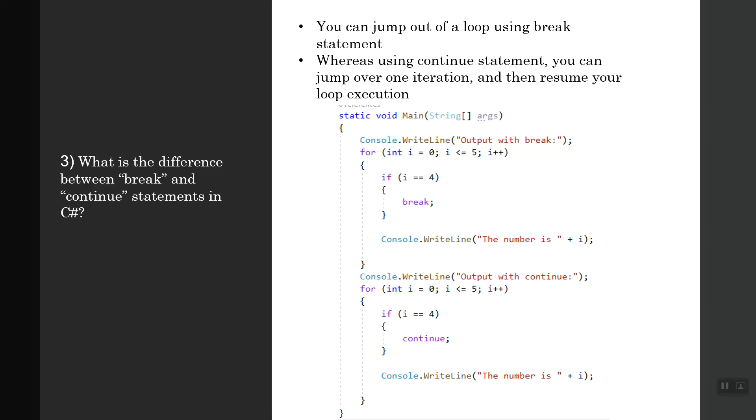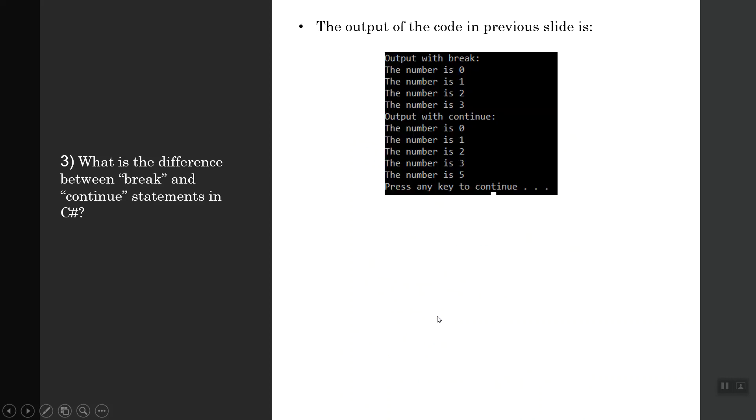Whereas in the continue statement, when it encounters i equals 4, it will jump out of that iteration. It will skip that iteration and continue when i becomes 5. That's why in the first code block, the number will be written as zero, one, two, three and it will break for good. With the continue statement, it will write zero, one, two, three. It will skip the fourth iteration and then the last iteration is 5.